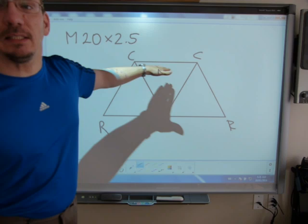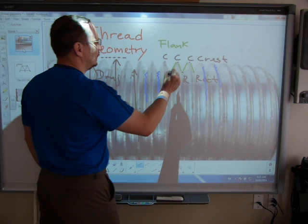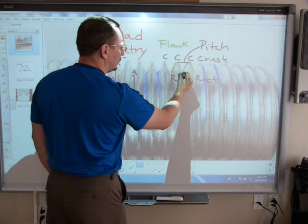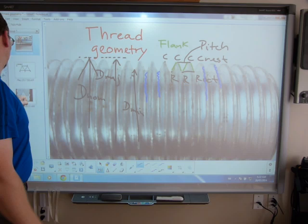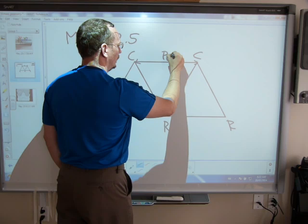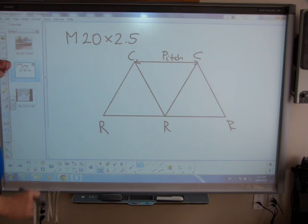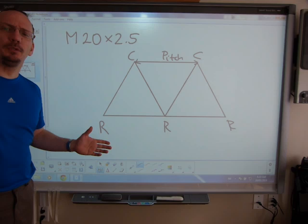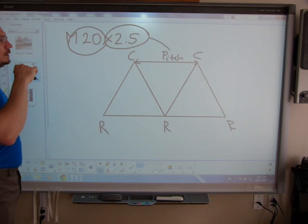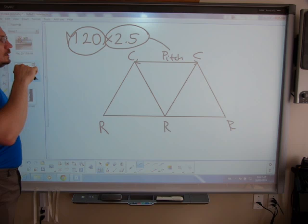The last feature we need is pitch. Thread pitch is measured from crest to crest, or equivalently from root to root — it's the same distance. In a thread designation like M20 x 2.5, the thread pitch is 2.5 millimeters, and the 20 is also in millimeters — that's your nominal diameter.